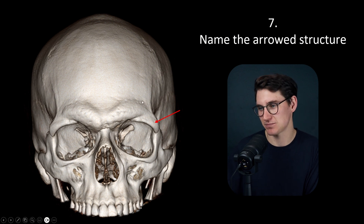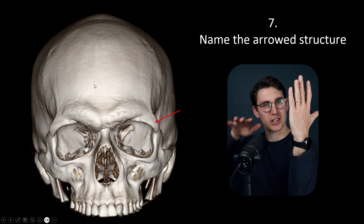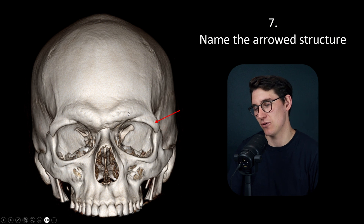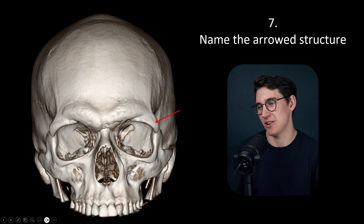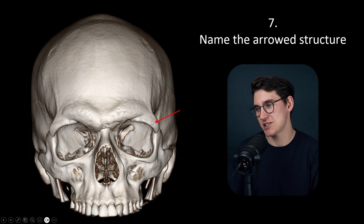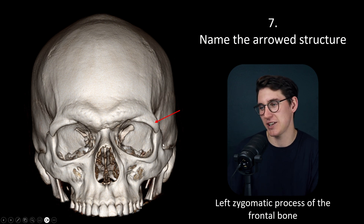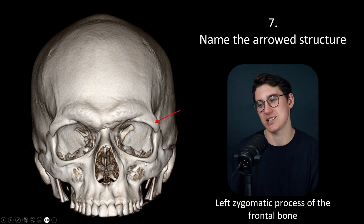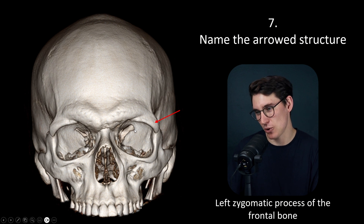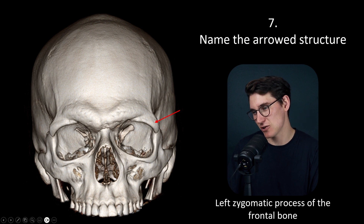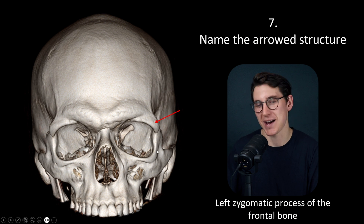Question 7 asks us to name the arrowed structure. We're dealing with the frontal bone, which has a vertical portion and a horizontal portion. The horizontal portion makes up most of the anterior cranial floor; the vertical portion is where the frontal sinuses are embedded. Here we've got the glabella in the midline, superciliary arches, and then this process extending out towards the zygoma. This is the zygomatic process of the frontal bone, on the left-hand side. People often get confused about the zygoma — the zygoma itself has three separate processes: a frontal process, a temporal process, and a maxillary process. The bone making up the posterior aspect of the orbit is the greater wing of the sphenoid, not the zygoma.